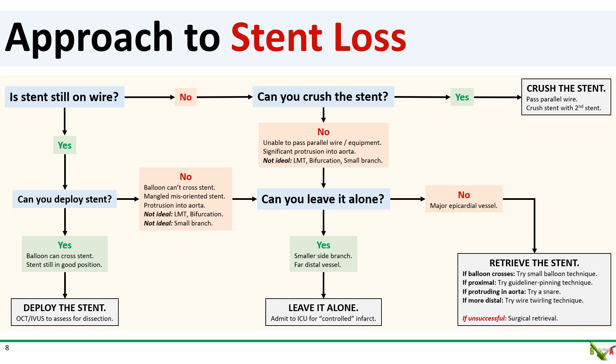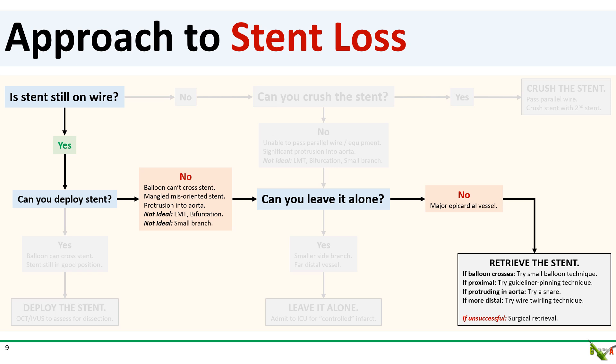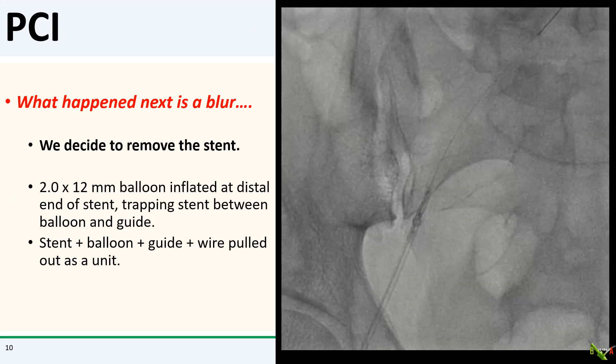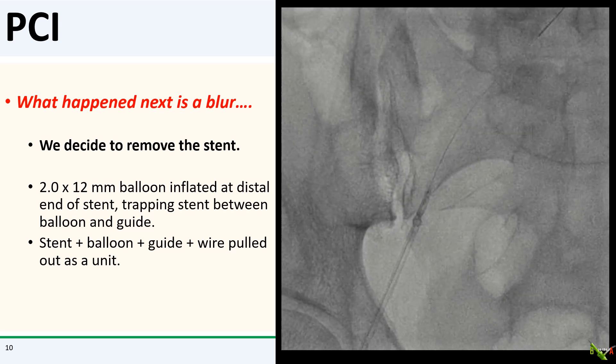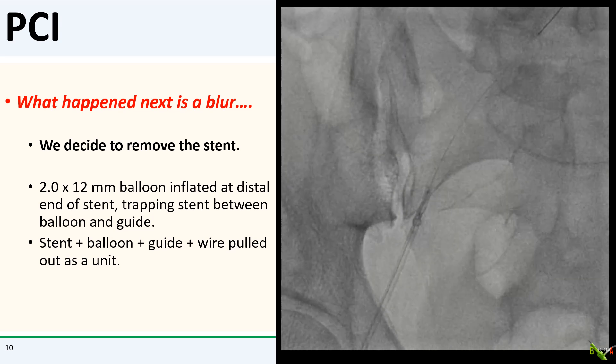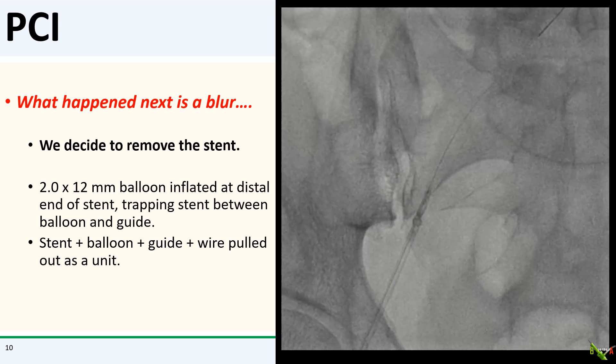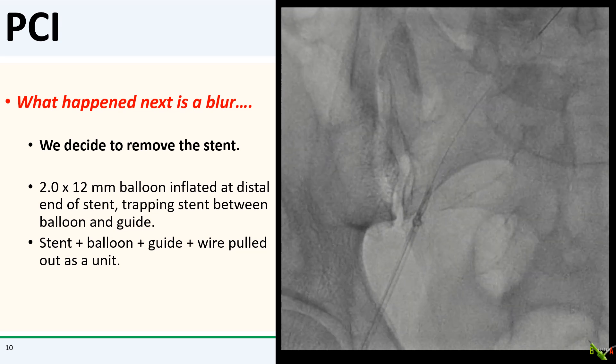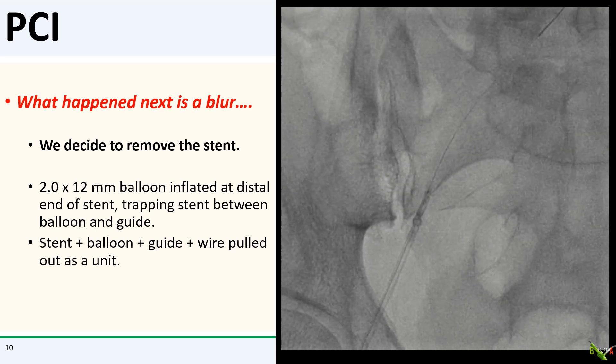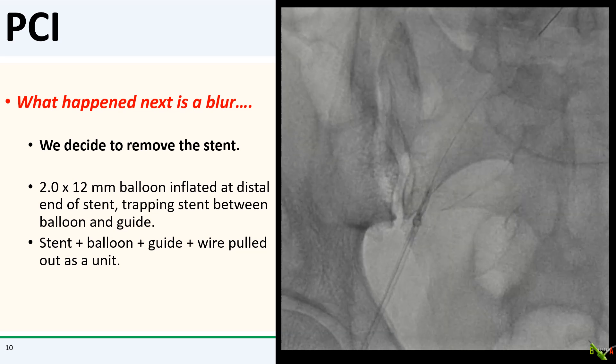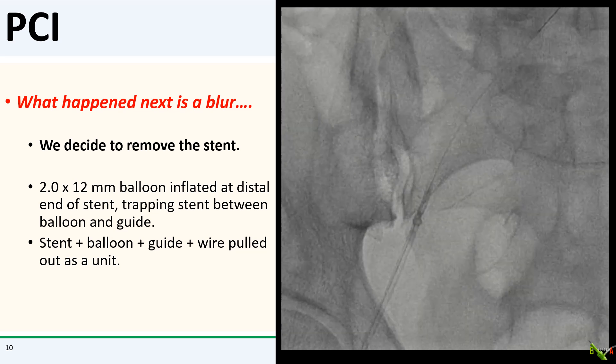We now had a case of stent loss with a deformed free-floating stent, mostly out in the aorta — all this in a STEMI patient. My options were rather limited. Going by the algorithm, I couldn't deploy the stent where it was, and I certainly couldn't leave it alone. My only option was to retrieve the stent. I passed a 20x12mm balloon through the stent, and fortunately this passed relatively easily. I inflated the balloon at the distal edge of the stent, essentially trapping it on the wire between the balloon and the guide. The stent, balloon, guide, and wire then all came out as a unit. You can see a picture of the mangled stent on the coronary wire in the femoral artery, and we were eventually able to recover the stent.